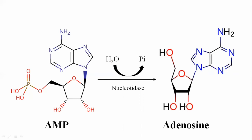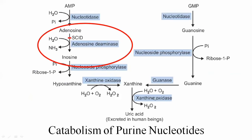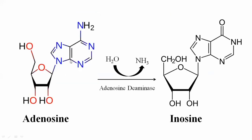Adenosine is the substrate for the enzyme adenosine deaminase, and adenosine is converted into inosine. Adenosine contains an amino group, and this amino group is removed by the enzyme adenosine deaminase.